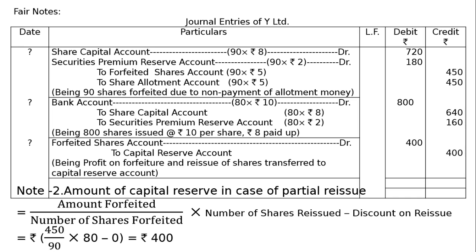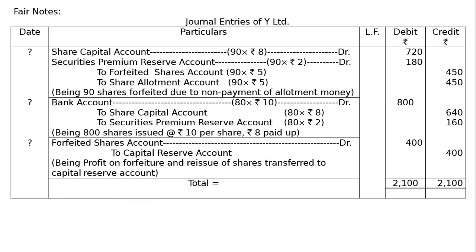Forfeited Shares Account debited to Capital Reserve Account. Calculation: ₹450 forfeiture value ÷ 90 shares forfeited × 80 shares reissued minus ₹0 discount on reissue (shares issued at a premium, so no discount) = ₹400. Entry in debit and credit column: ₹400. Being forfeited shares account transferred to Capital Reserve Account. Total: ₹2100. This is the final answer.